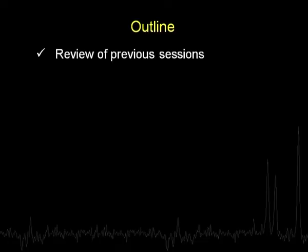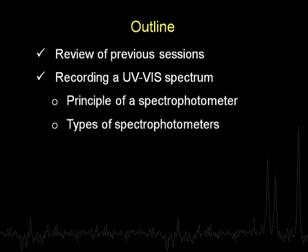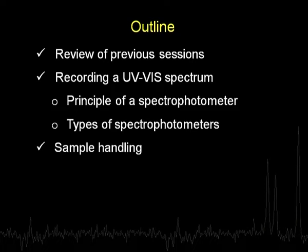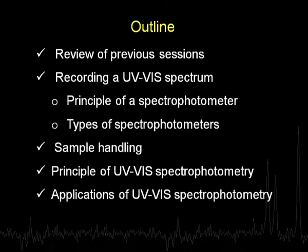The session is planned as follows. To begin with we will review what we did in the previous sessions. Thereafter we will see how do we record a UV visible spectrum. In this context we will talk about the principle of a spectrophotometer. Then we will take up two different types of spectrophotometers and discuss how one records a spectrum with them. We will briefly touch upon sample handling, then talk about Beer's law and Lambert's law, and lastly take up few applications of UV visible spectrophotometry.